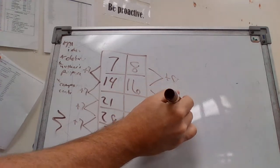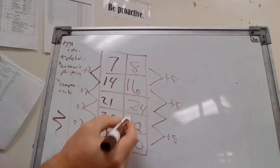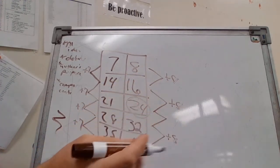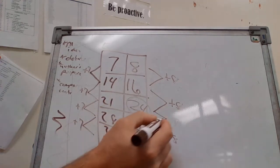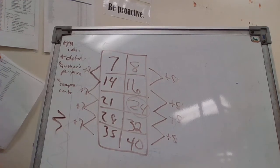this has got to be plus 8 because the other ones are plus 8. So 16 plus 8 is 24 - that's our answer there. Let's check it: to get from 24 to 32, that is plus 8 also. So these are ratio tables.